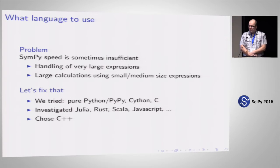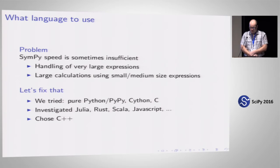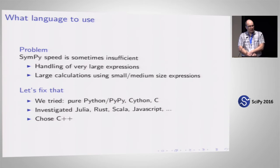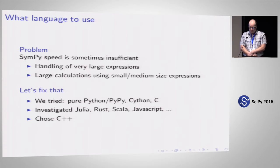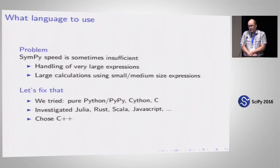SymPy can do a lot of things and it's very useful to a lot of people. But even at this conference, one of the common complaints is that sometimes it can be slow. Typically when you have to handle very large expressions — for example, large expressions where you want to generate C code or Fortran code — it can be pretty slow. Or many times the expressions are small or medium size but you have a large calculation and it's just slow.